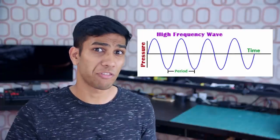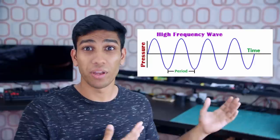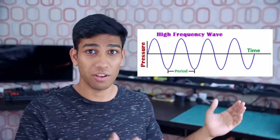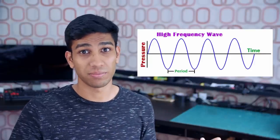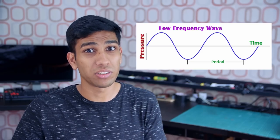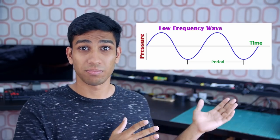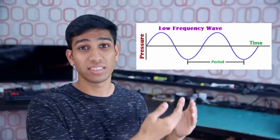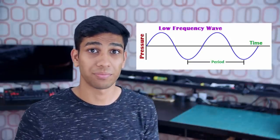A higher frequency wave signal looks something like this, with more wave cycles fit inside this voltage versus time graph with a very short peak-to-peak distance. Meanwhile, a lower wave frequency looks more stretched out — something like this — and can fit fewer wave cycles in the same duration of time.